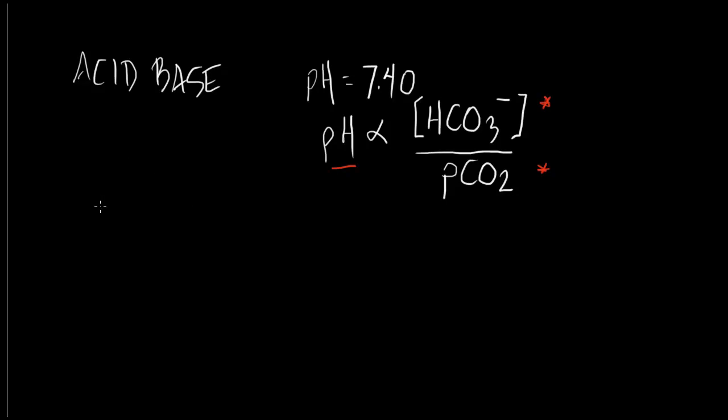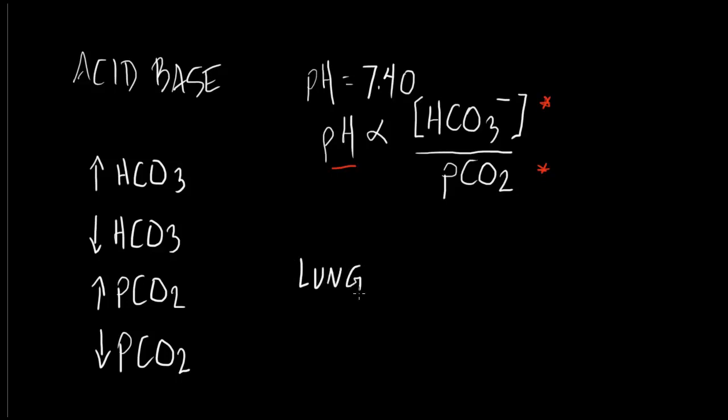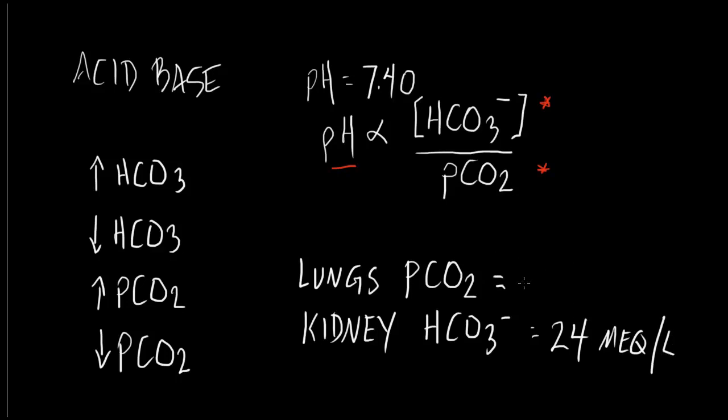What are some of those things that you need to watch out for that can alter the pH? Anything that increases bicarb, decreases bicarb, increases PCO2, or decreases PCO2. You will remember that the lungs regulate the amount of PCO2 eliminated, and the kidney will attempt to maintain a bicarb equal to 24. The lungs will try to maintain the PCO2 equal to 40.